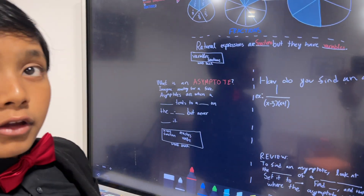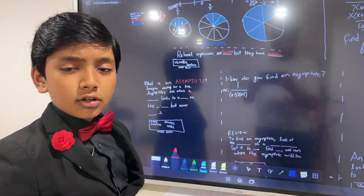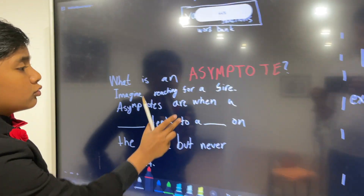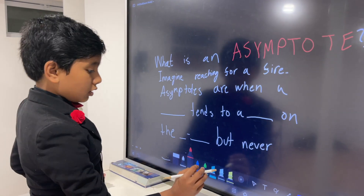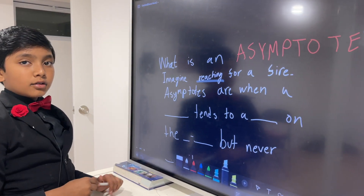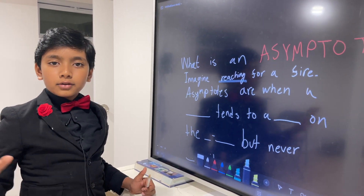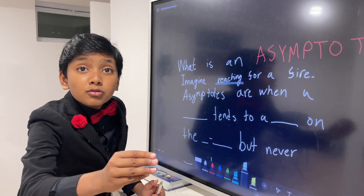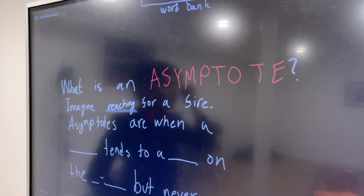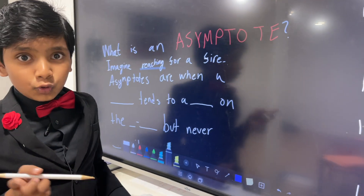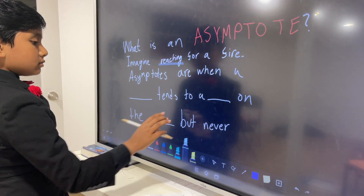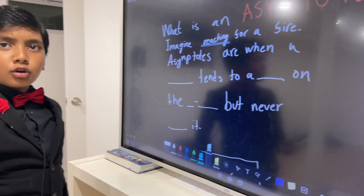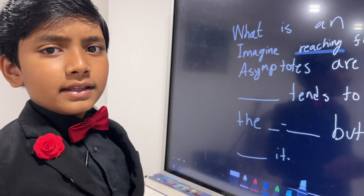What happens when we graph a rational expression? Well, to explore that, we first need to know what an asymptote is. So what is an asymptote? Imagine reaching for a fire. If you're reaching for it, you come closer and closer and closer, but you never dare touch it and burn yourself. Just like the camera might come closer and closer to me, but it'll hopefully never touch me — or the floor, for that matter.